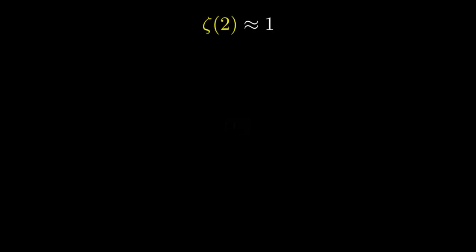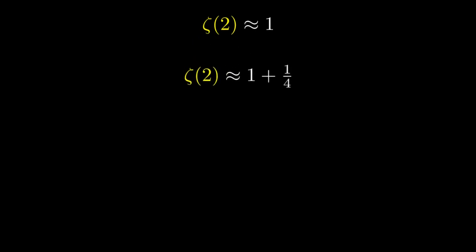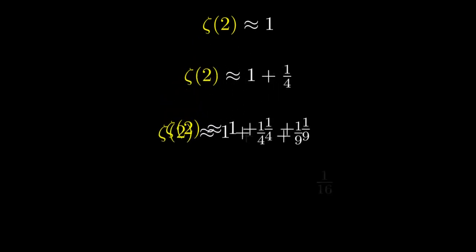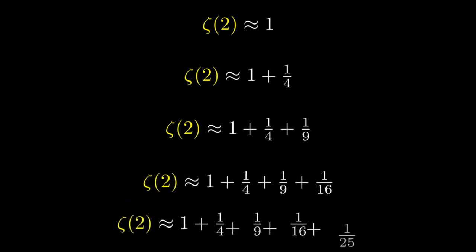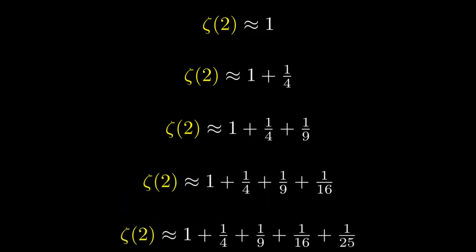If you want to find zeta zeros, the first thing to ensure is that the series is convergent. Let's take zeta of 2 for example. While it may seem non-trivial, Euler solved this infinite sum and proved that it converges to pi squared over 6. What does this have to do with a circle? Well, that's for a later video.